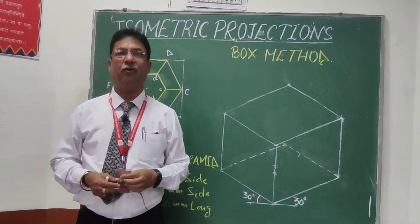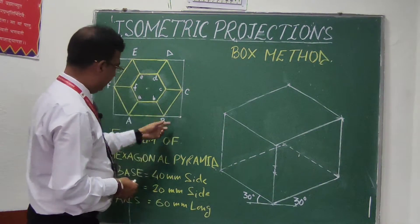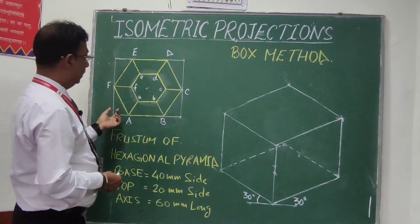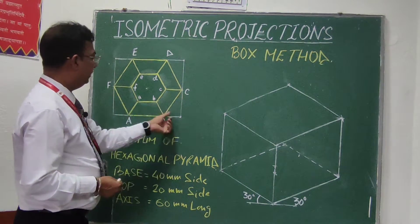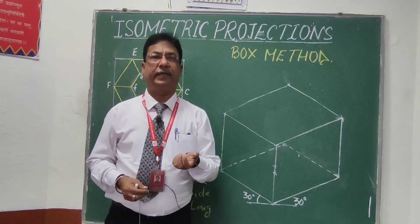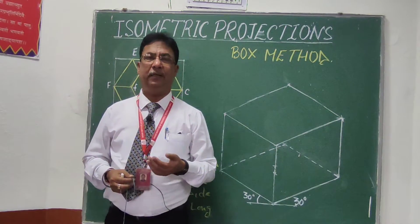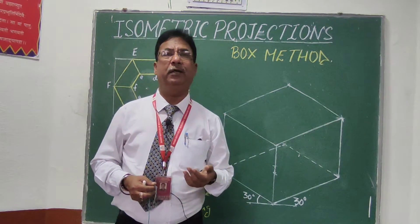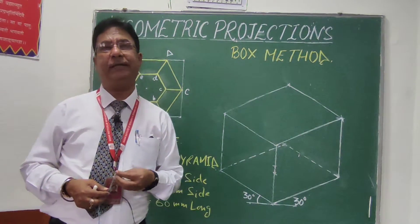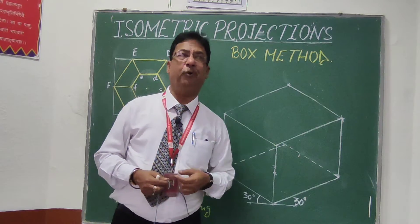In the box method, what we will do initially is close the top view of that object inside a rectangle. I have already bounded this by a rectangle, shown in white. Now we will draw a cuboid of this length by this length by height 60mm, and that will be the box inside which I am going to keep my frustum of hexagonal pyramid. In isometric drawing it is easiest to draw a cube or cuboid, since all lines of a cuboid are isometric lines, so we can easily place those lines on the 30°, 30°, and 90° axes.